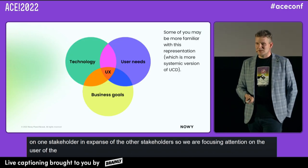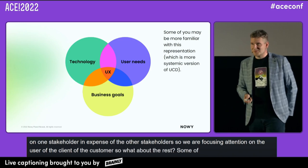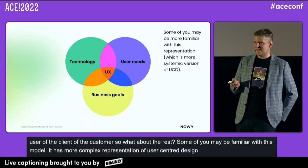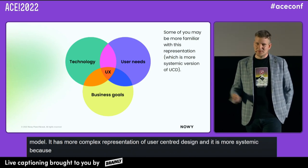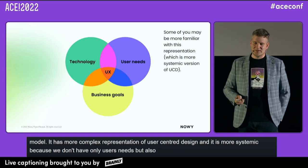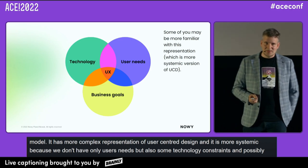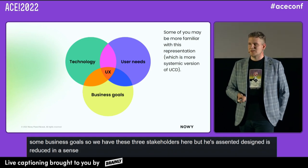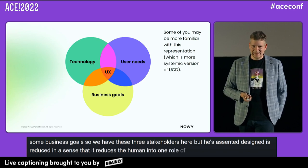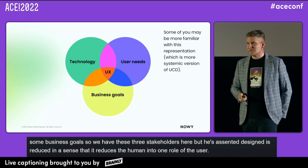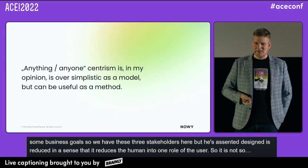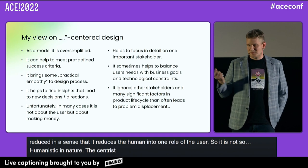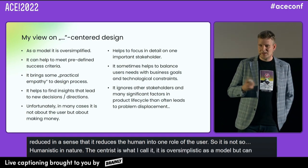Some of you may be familiar with a more complex representation of user-centered design — more systemic, because we don't have only user needs but also technological constraints, possibilities, and business goals. So we've got three stakeholders. But user-centered design is reductionist in the sense that it also reduces the human into one role: the user. So it's not so humanistic in nature. The UX-centric model is, in my opinion, oversimplistic as a model, but can be useful as a method.